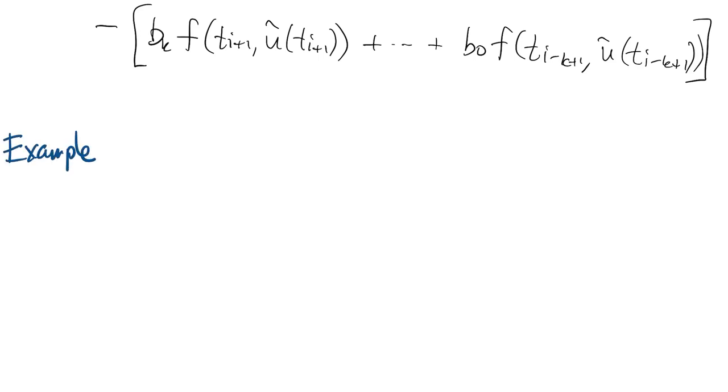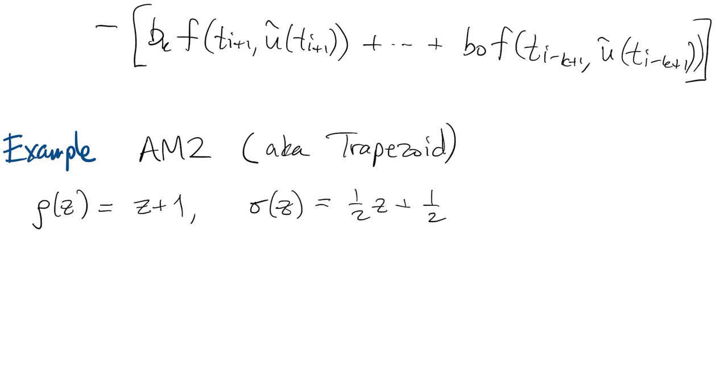For example, let's look at the Adams-Moulton method of order 2. This is known as the trapezoid formula. It has rho equal to z minus 1. That's a typo on the slide. It should say z minus 1. And sigma is equal to 1 half z plus 1 half.